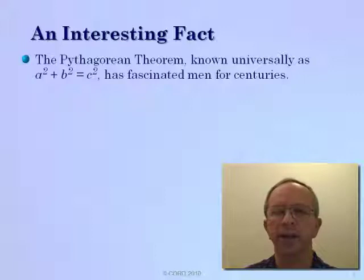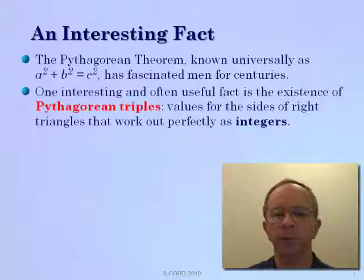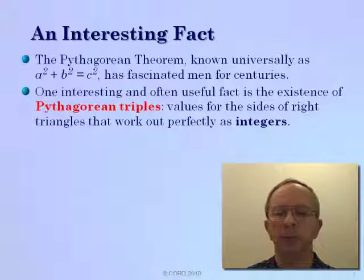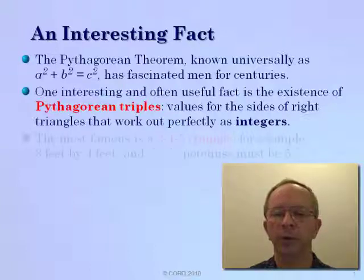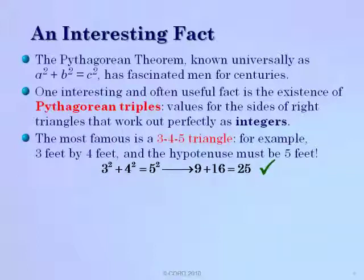Here's an interesting fact: the Pythagorean theorem, A squared plus B squared equals C squared, has fascinated people for centuries. One useful fact is the presence of three integers that work out perfectly for the Pythagorean theorem — called Pythagorean triples. The most famous is the 3, 4, 5 triangle. A 3 foot by 4 foot triangle has a hypotenuse that is 5 feet long. This is very useful when framing or verifying a right angle: measure out 3 feet and 4 feet on the two sides and check whether it's 5 feet between the two measured points.